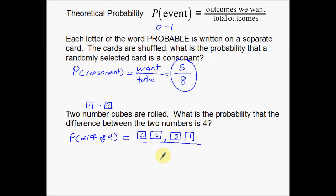Here's the thing: I'm rolling two number cubes. I can roll a six first for one number cube and a two for the second. But I can also roll a two for the first number cube and a six for the second. That would also give me a difference of 4.